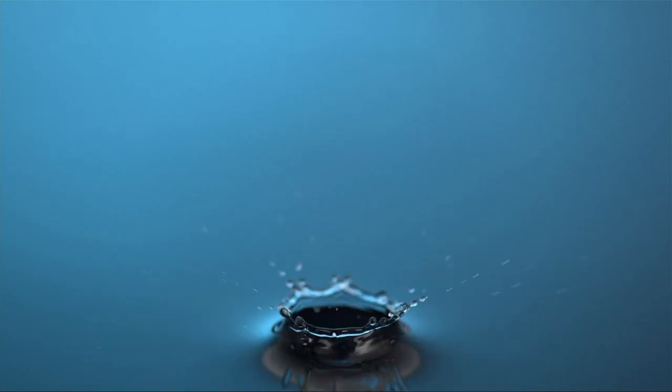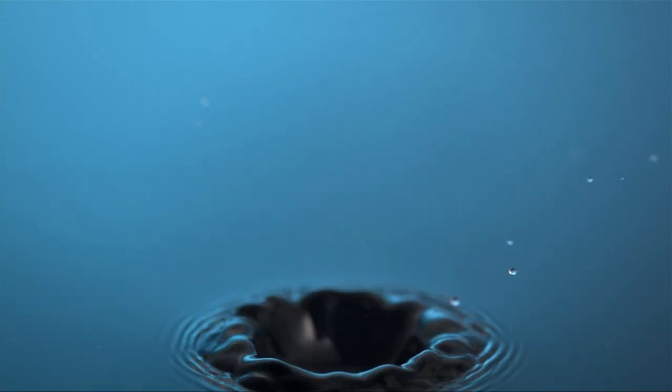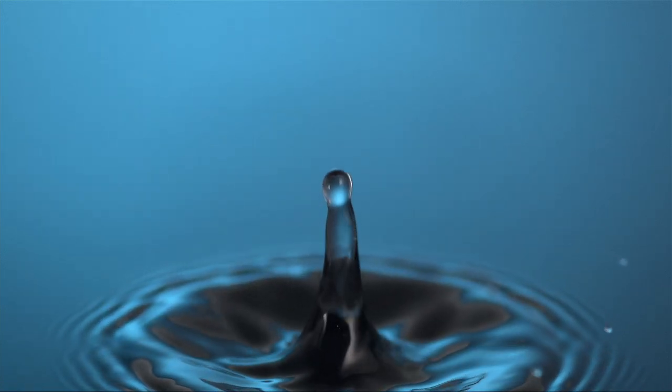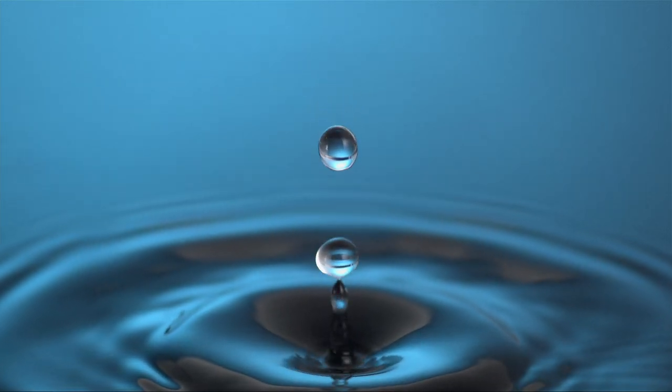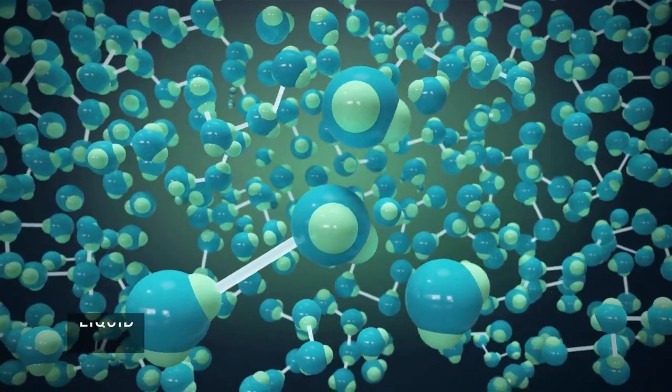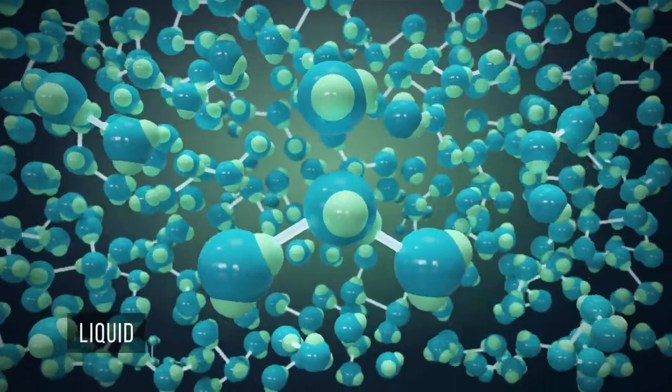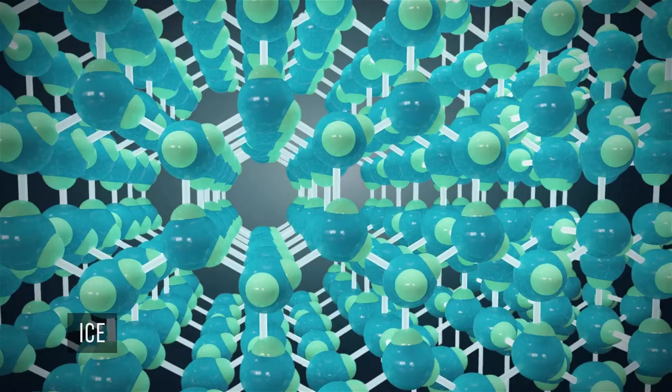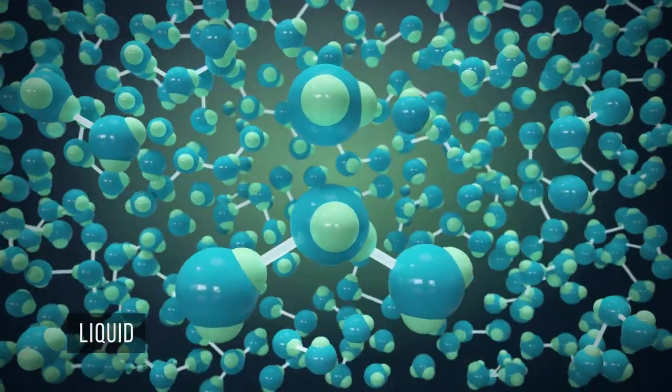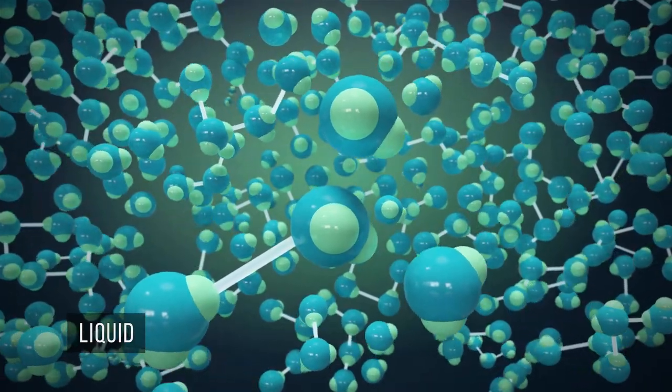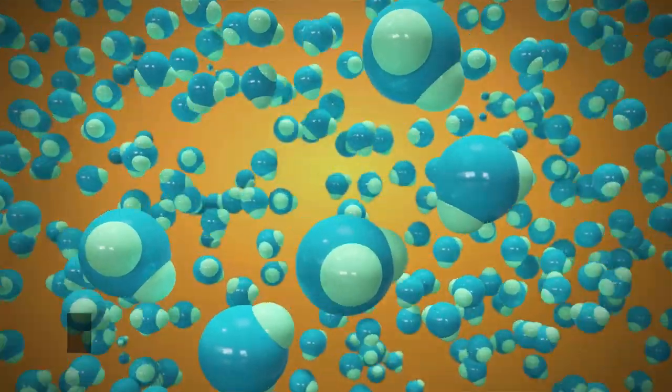We know that a substance can be in different states. For example, water can be in a solid, liquid or gaseous state. Heating or cooling liquid, you can get solid matter, ice, or gaseous matter, steam. The transition of matter from one state to another is called a phase transition.